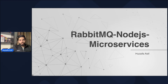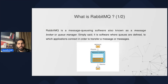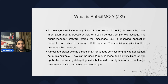What is RabbitMQ and how it can help us in the communication between microservices? RabbitMQ is a message queuing software, also known as a messaging broker or queue manager. Simply put, it is software where queues are defined to which applications connect in order to send various messages. A message can be of any type — information about a process, a task, or simply text. The queue manager stores the message until a receiving application connects, takes the message, utilizes it, and then removes it from the queue.